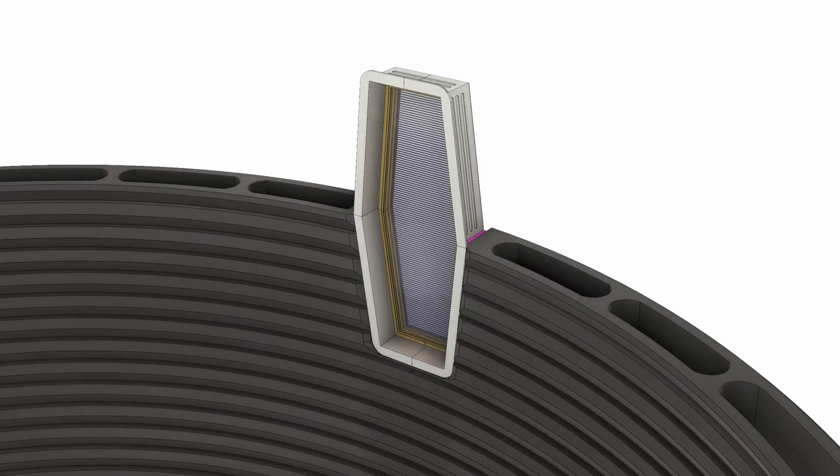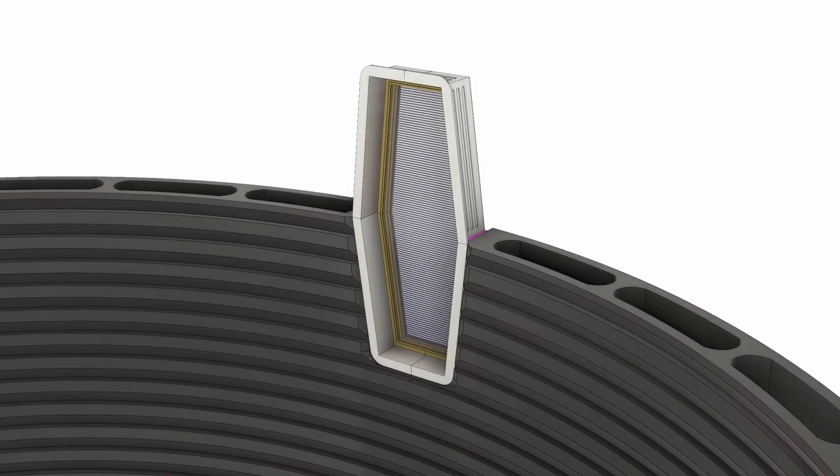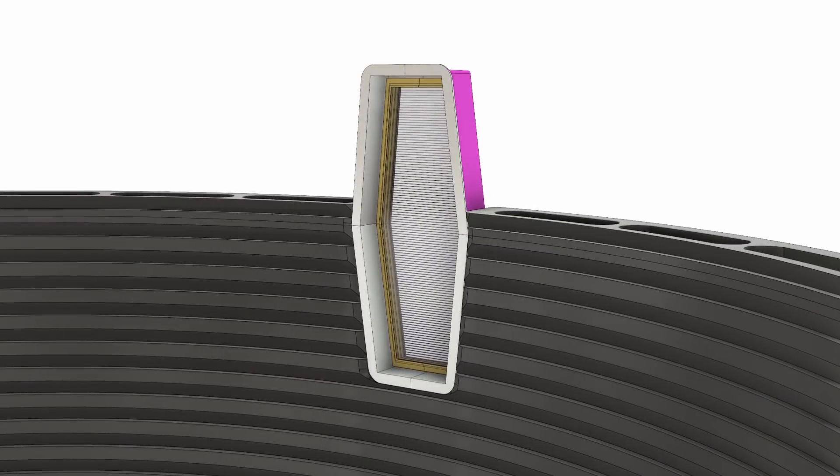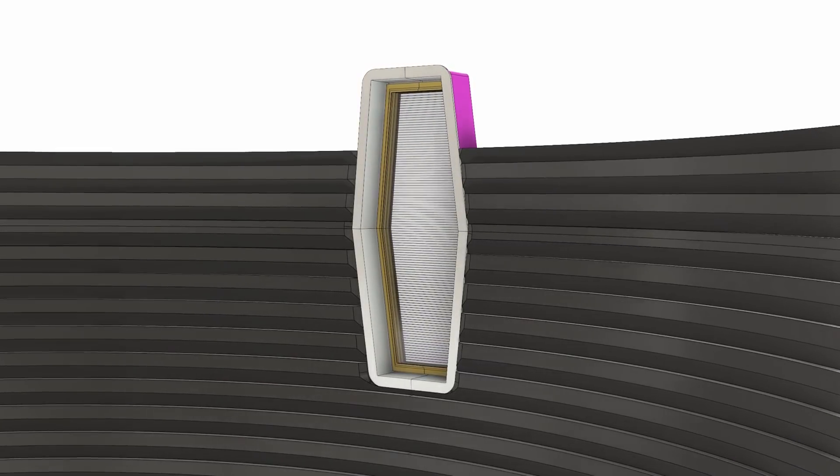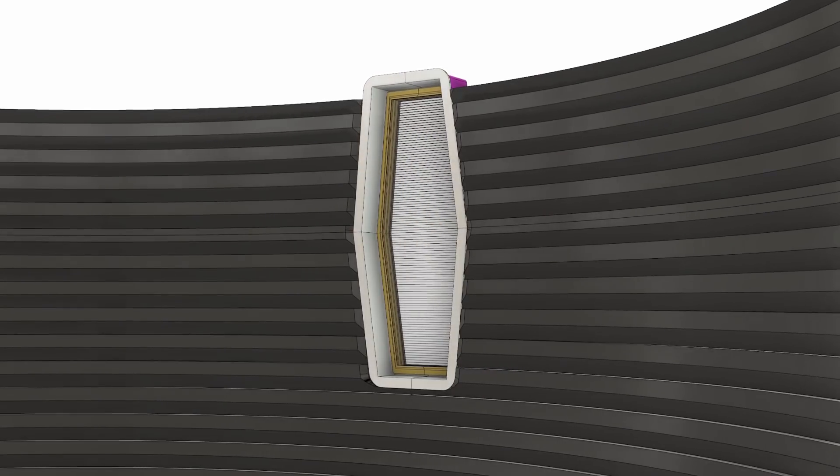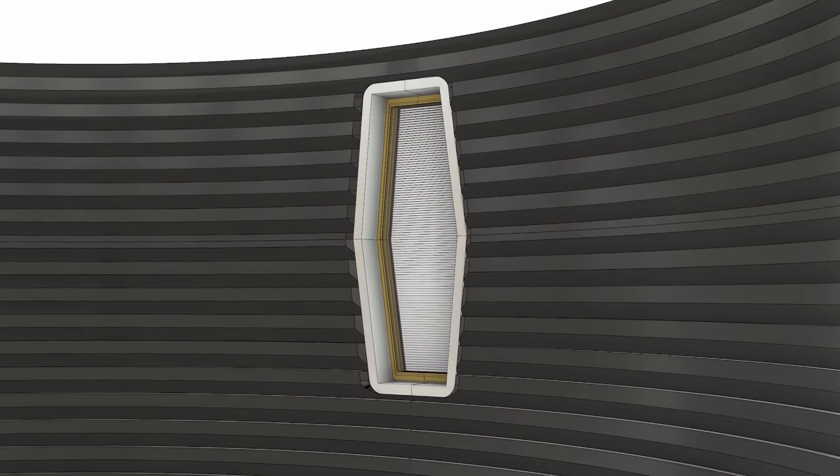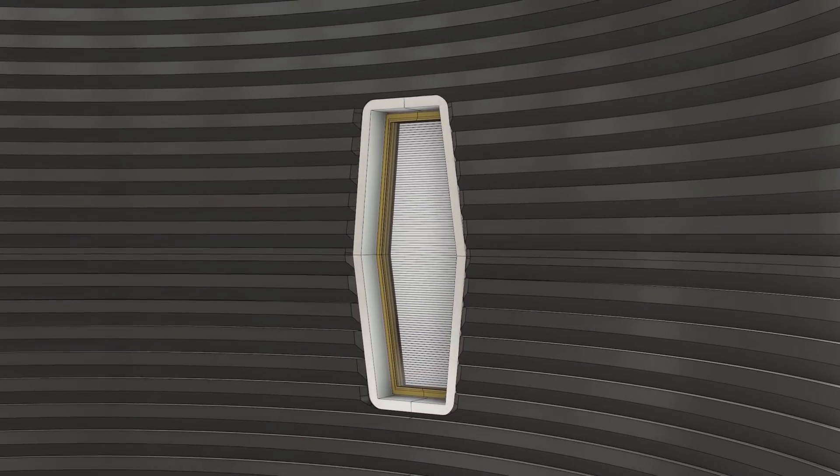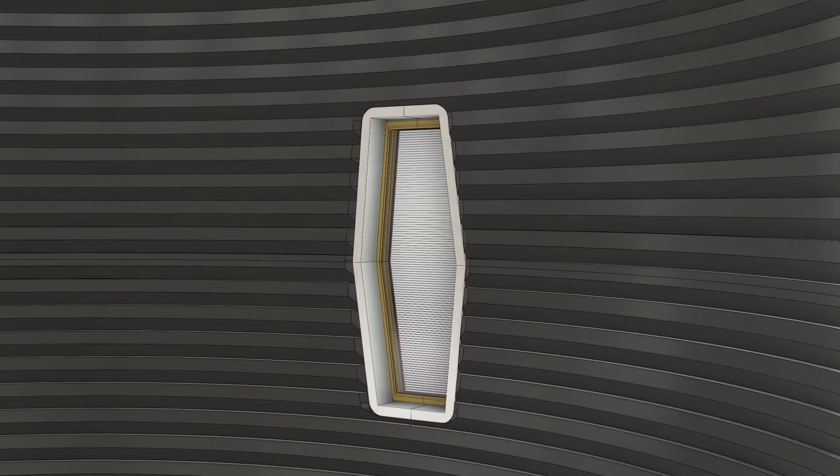The keystone-like shape decreases the risk of an imperfect fit by acting as a placement guide, effectively increasing construction tolerances and ensuring a snug, wedge-like fit. An inner flange mechanically holds the elements in place against the force of internal pressure, which becomes fully secured as printing continues.